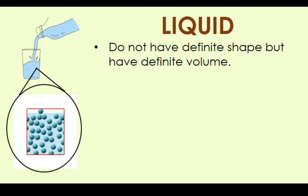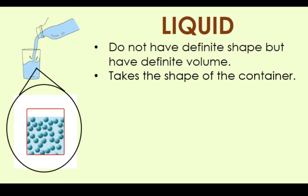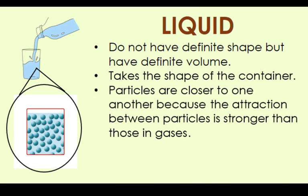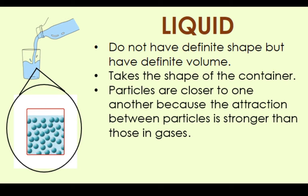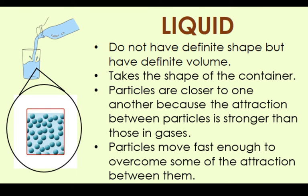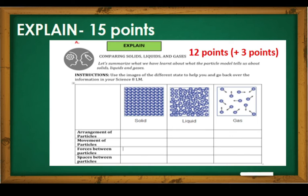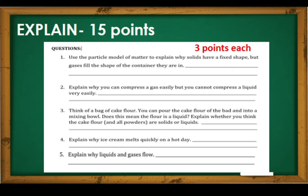Liquids do not have definite shape but have definite volume. Same with gases, it also takes the shape of the container but is limited depending on the volume of the liquid. Particles are closer to one another compared to gases because the attraction between particles is stronger than those in gases. And particles move fast enough to overcome some of the attraction between them. Now, try to summarize what you have learned about the particle models of liquid and gases by completing the table below. You also have to answer the five guide questions.